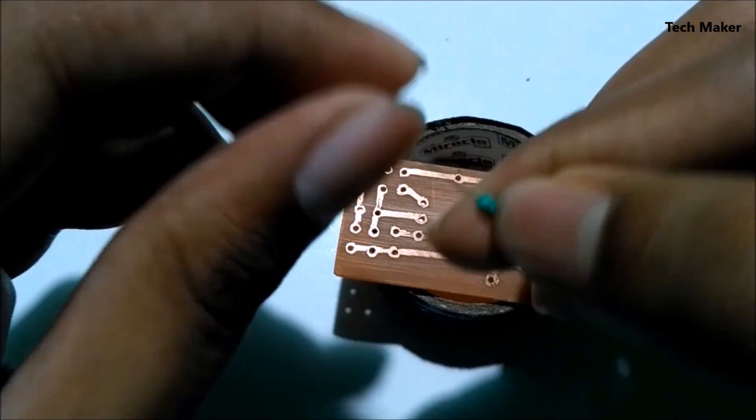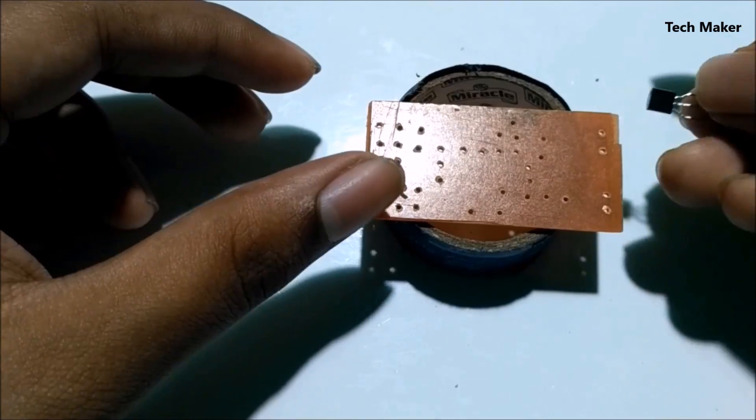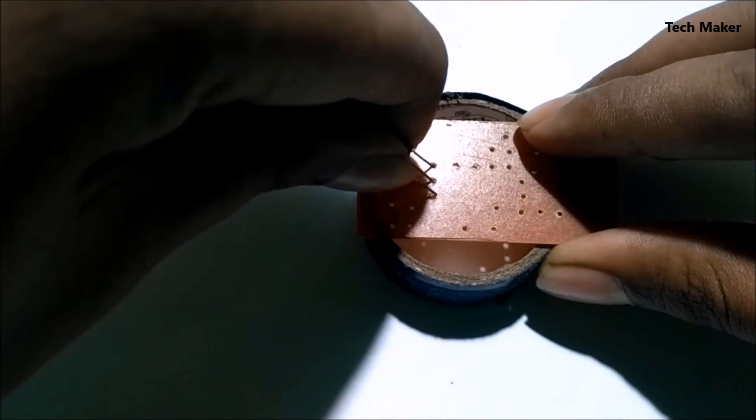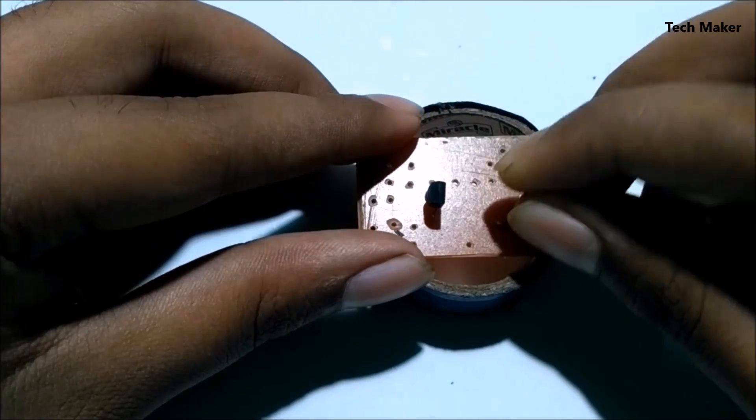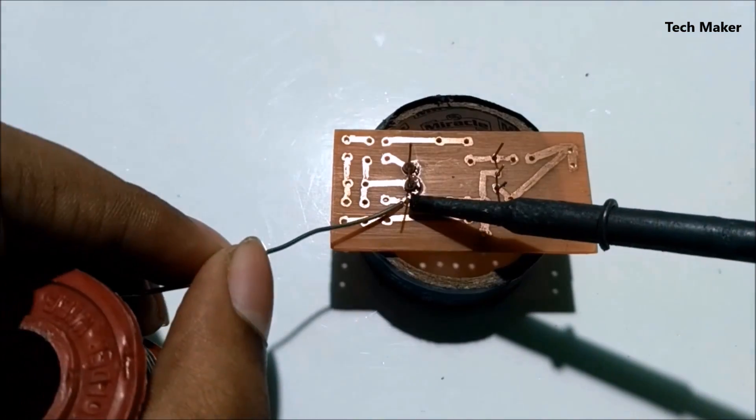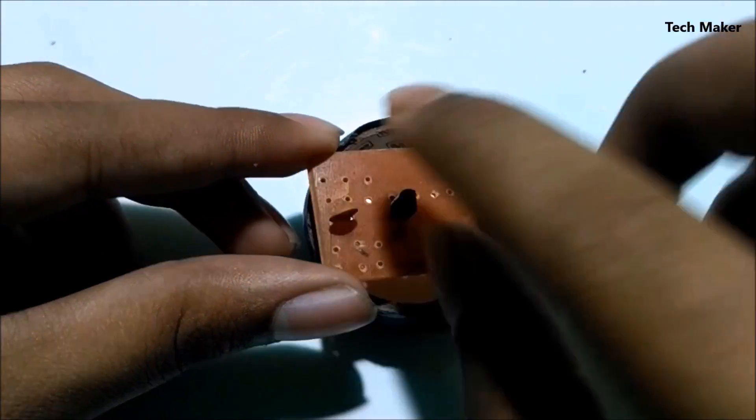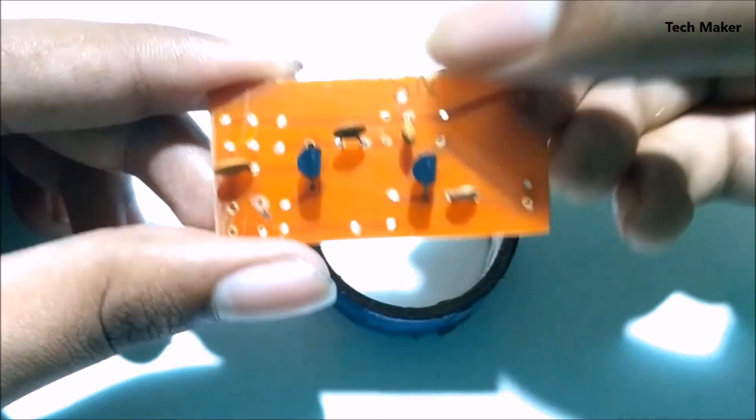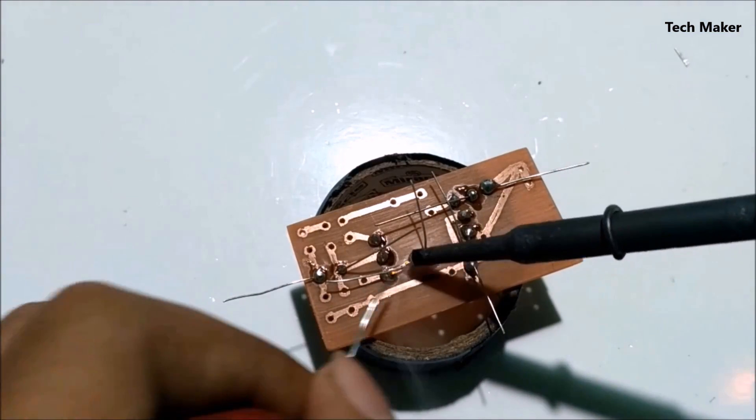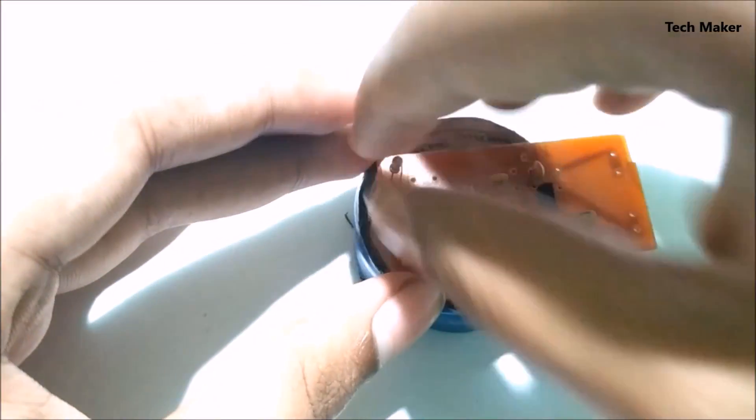Fold all the resistors like this. First I start with inserting the transistors into the PCB. Now solder it. Now the turn of capacitors. After placing all the capacitors, solder them.